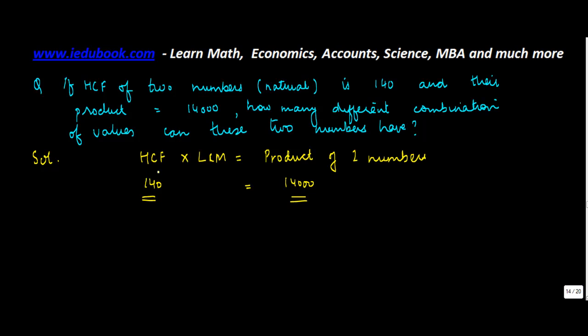Let's say there are numbers X and Y and the highest common factor of these two numbers is 140. So if the highest common factor itself is 140, then both X and Y have to contain 140 at the minimum.